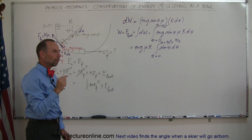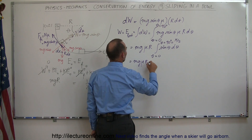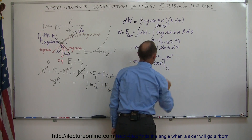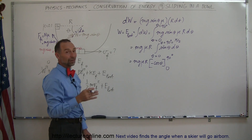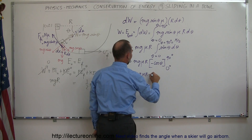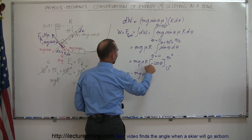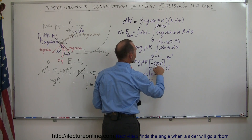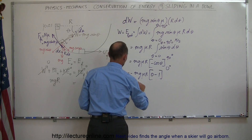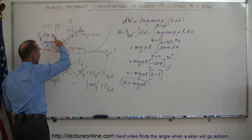The integral of sinθ is negative cosine. So this equals MgμR times negative cosθ evaluated from 0 to 90 degrees. The cosine of 90° is 0 and the cosine of 0° is 1. So we get MgμR times minus (0 − 1), which equals MgμR times positive 1. Therefore, the total energy lost by the object sliding down the bowl is MgμR.